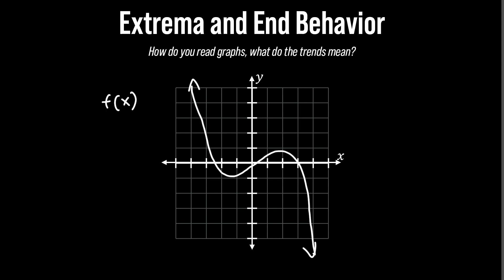This graph of course is the function f of x and if we were to label the plots, let's say this is 2, this is 2, this is negative 2, and this is also negative 2.